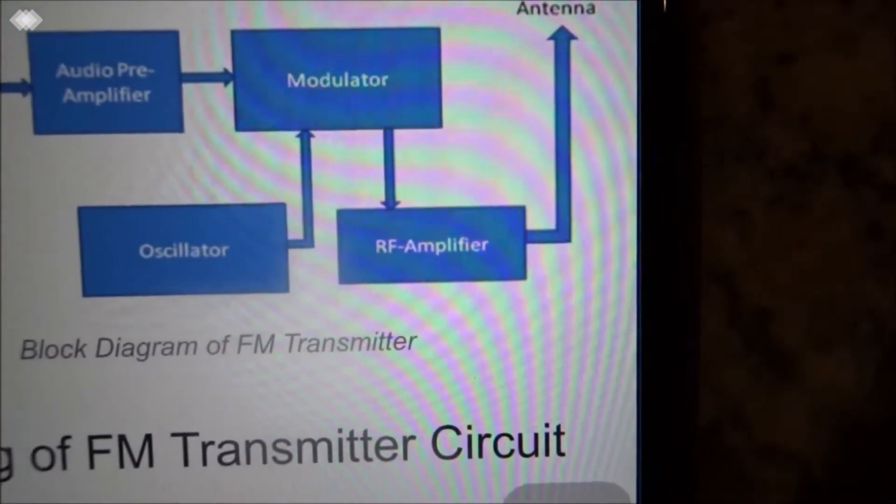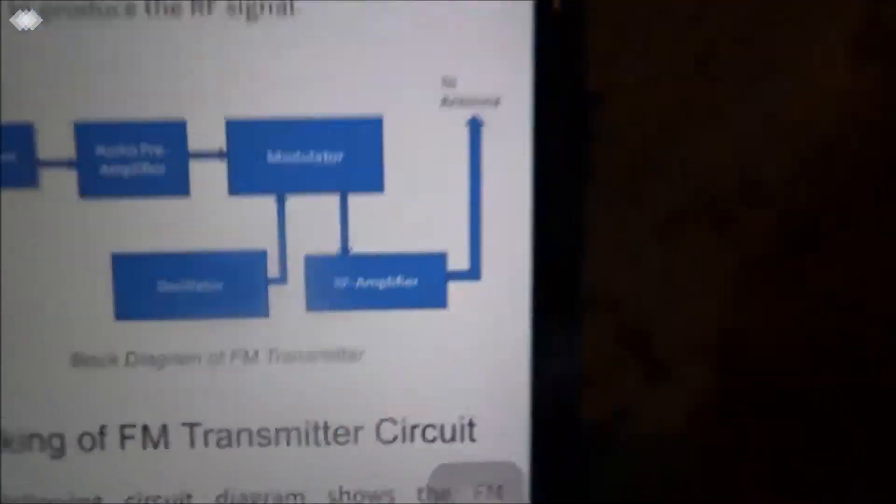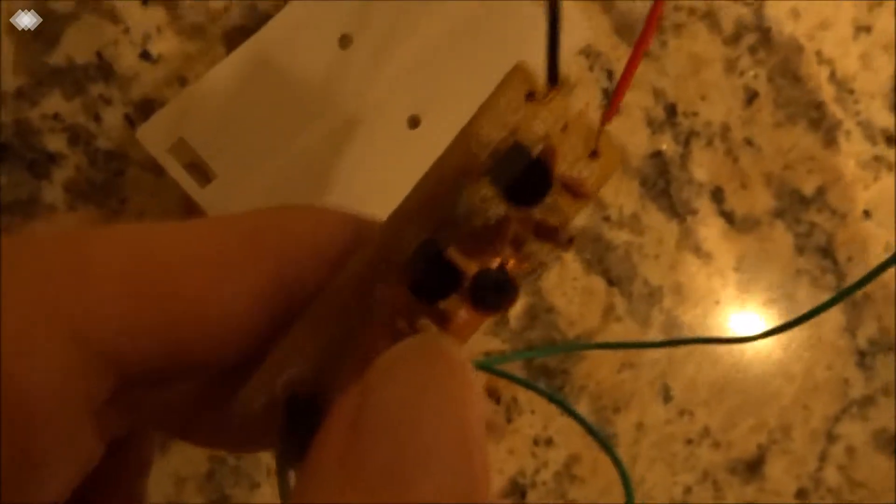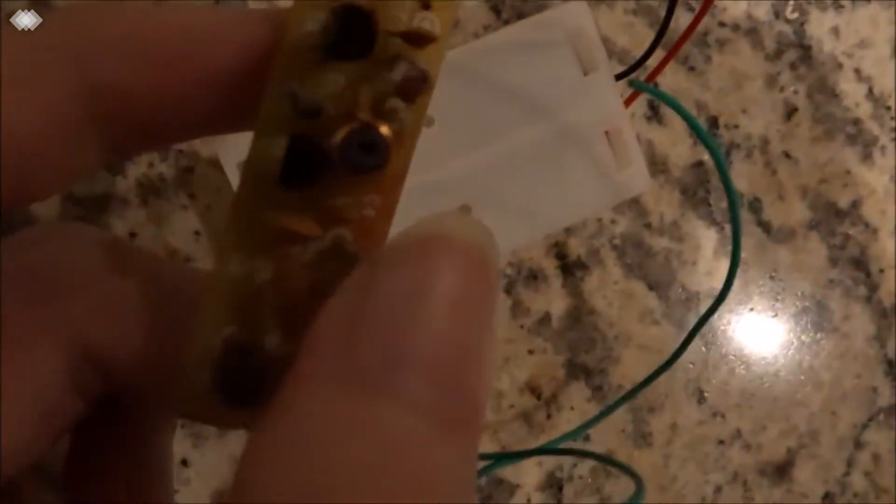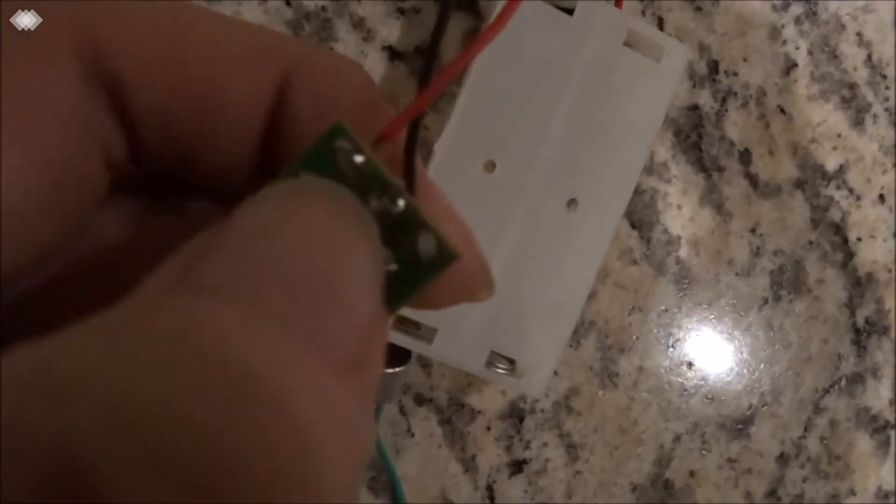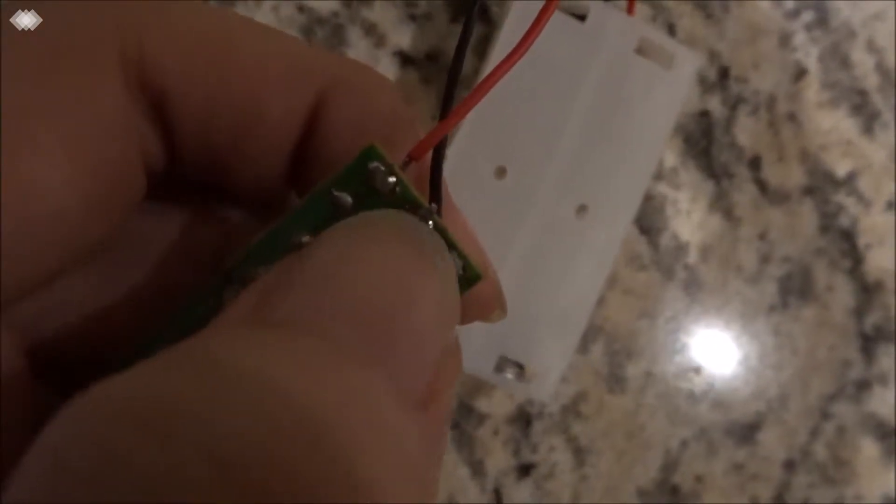It will go to the RF amplifier, which amplifies the signal. This is the power supply - it needs power to run. Then it goes to the antenna, which should be here in the middle, but it broke off.